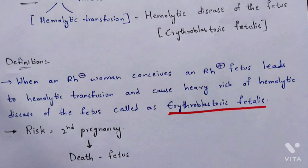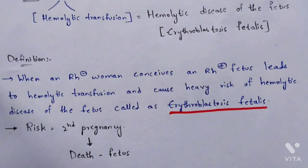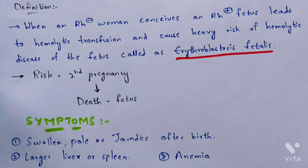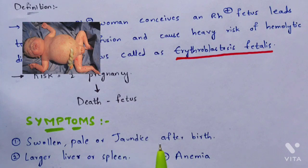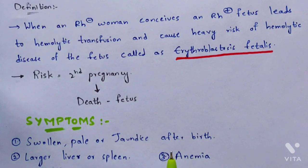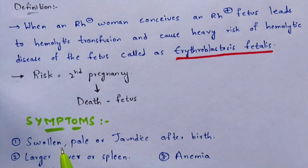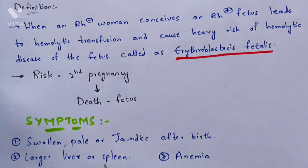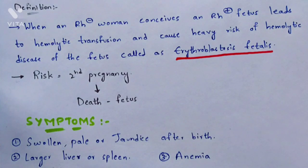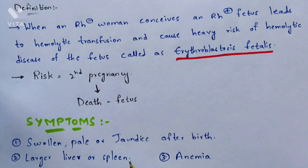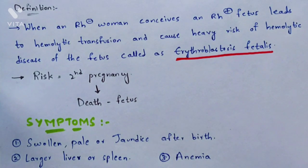The symptoms of erythroblastosis fetalis include: first, the baby appearing swollen, pale, or jaundiced after birth. Second, a larger liver or spleen compared to normal infants. Third, anemia — a low count of red blood cells. These three symptoms can be observed in a fetus infected with erythroblastosis fetalis even when delivery is successful, only in the case of a second pregnancy.